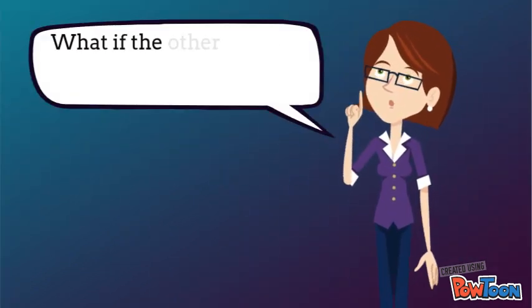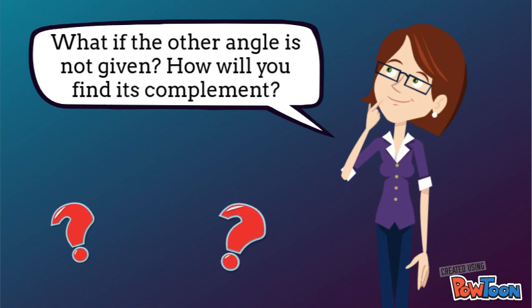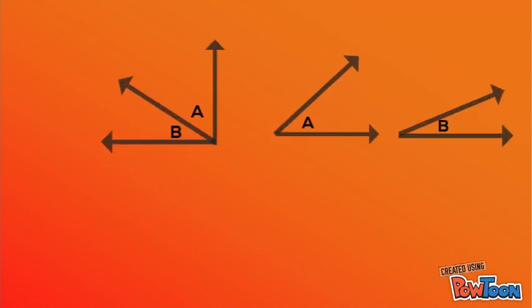What if the other angle is not given? How will you find its complement? Based on the examples I've shown you earlier, we can say that for complementary angles, the sum of the angles is 90 degrees. Simply put, angle A plus angle B equals 90 degrees.